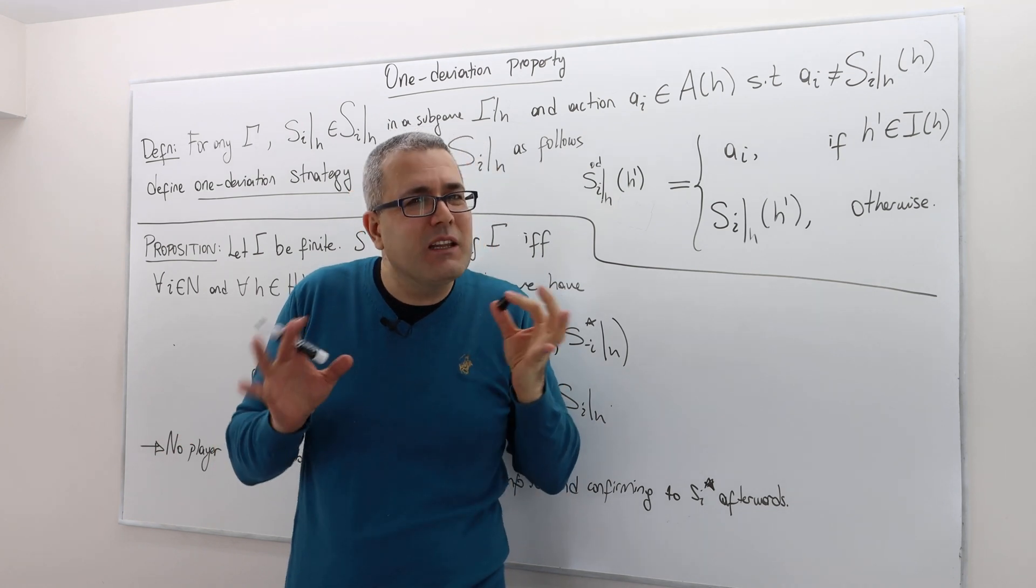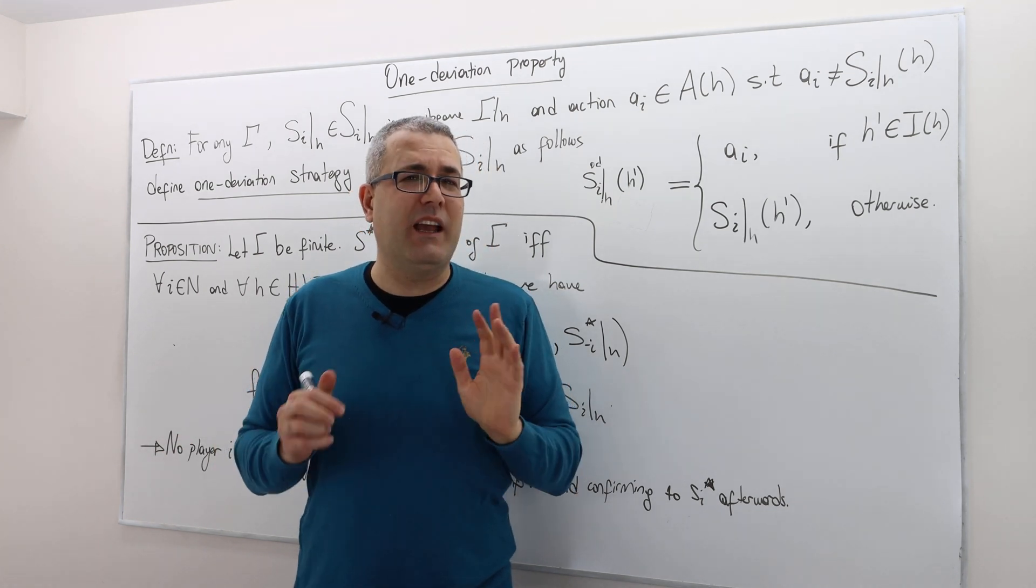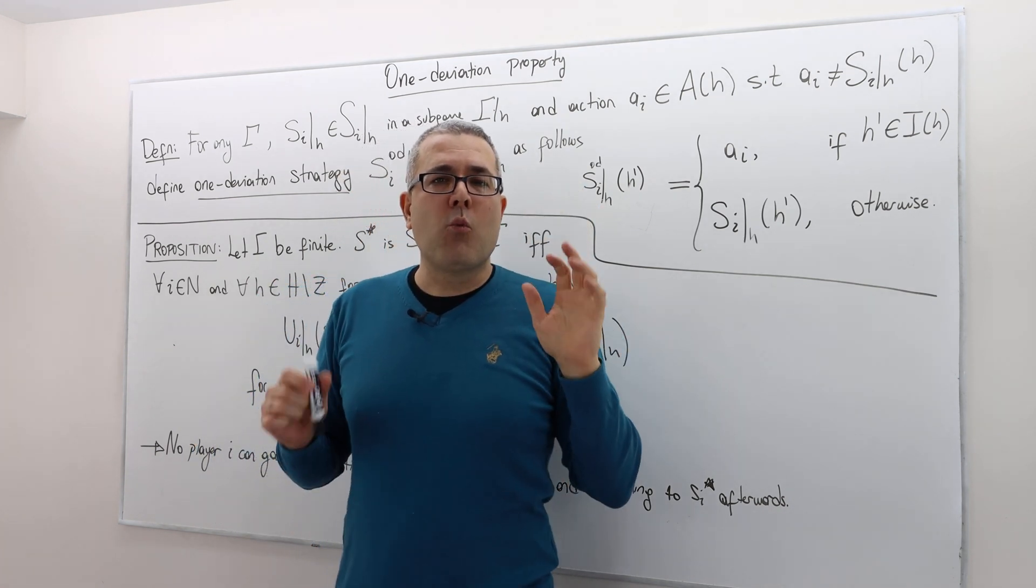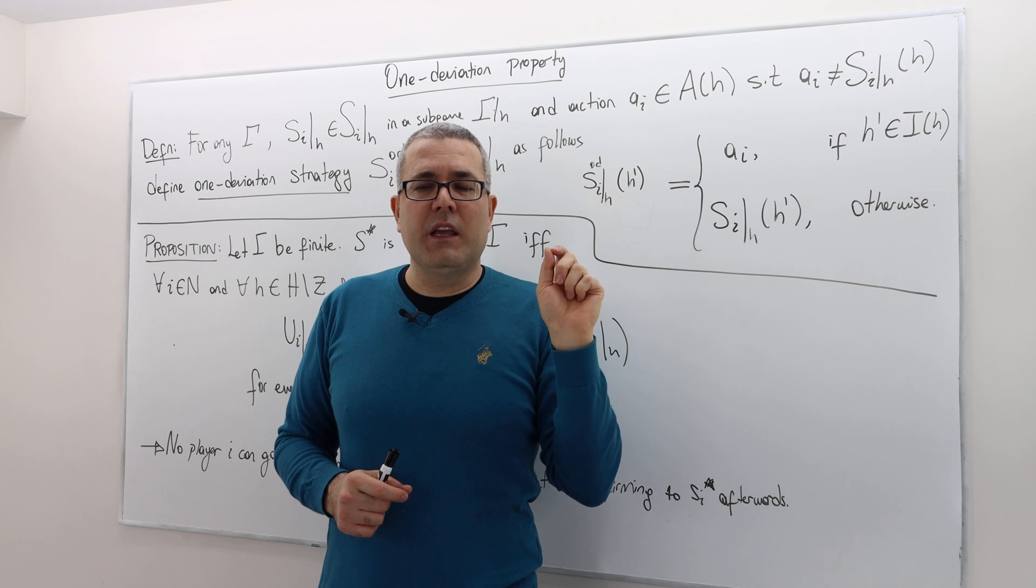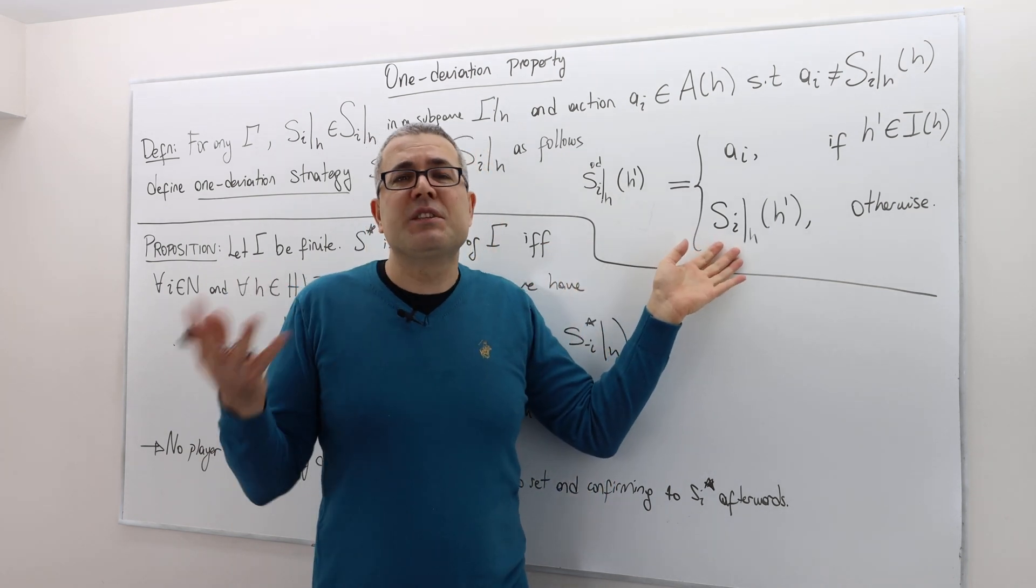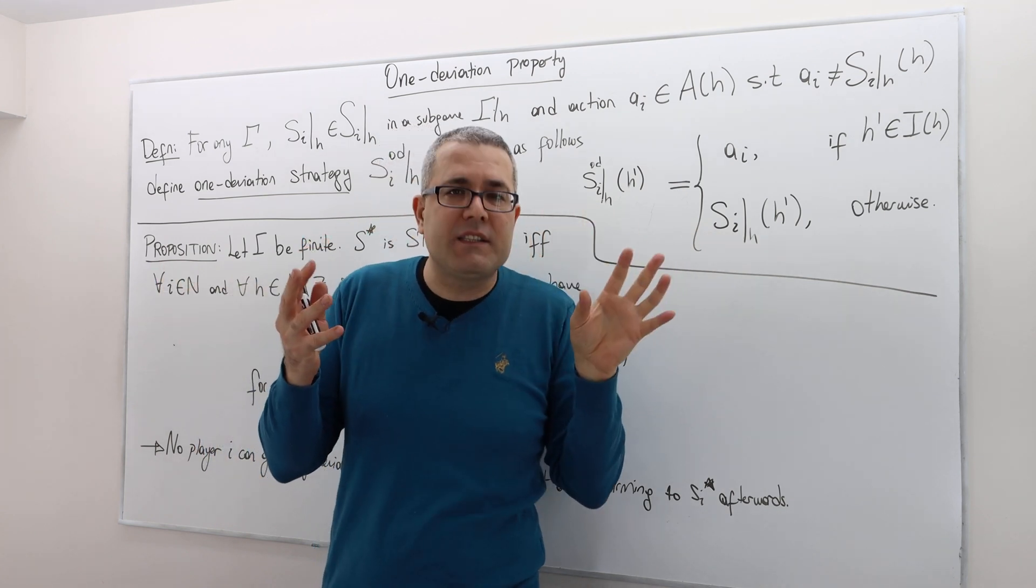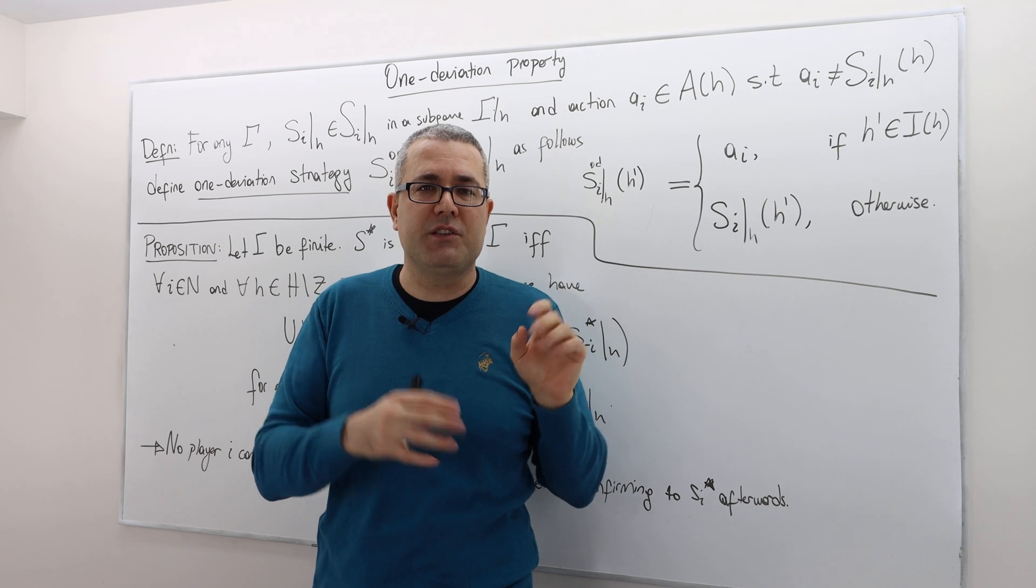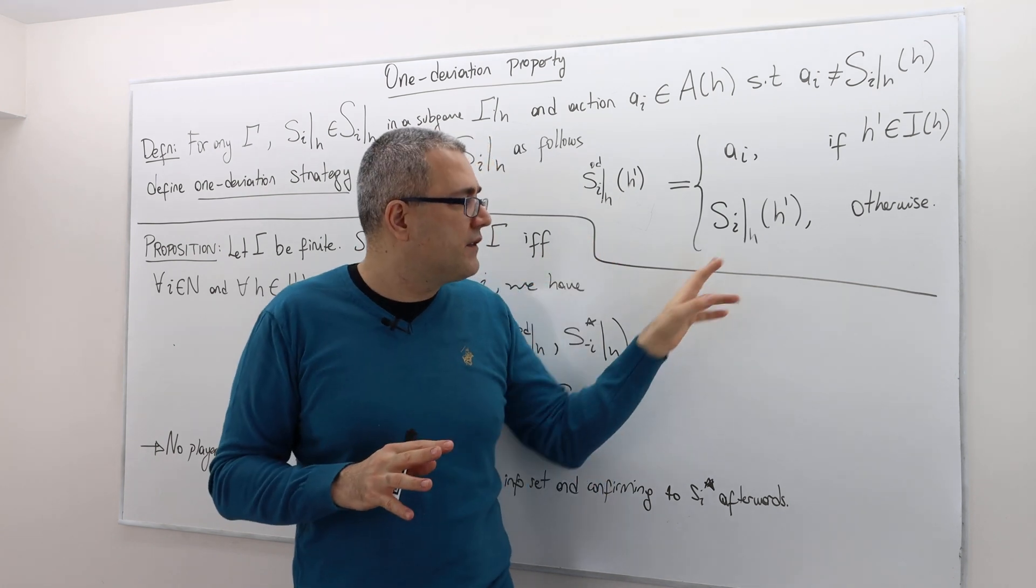So it may be a bit unintuitive. What the heck is going on. So the intuition is very important. The one deviation property is a twisted version of some strategy SI. So how do we twist that strategy SI and generate one deviation strategy? Simple. We fix the history.